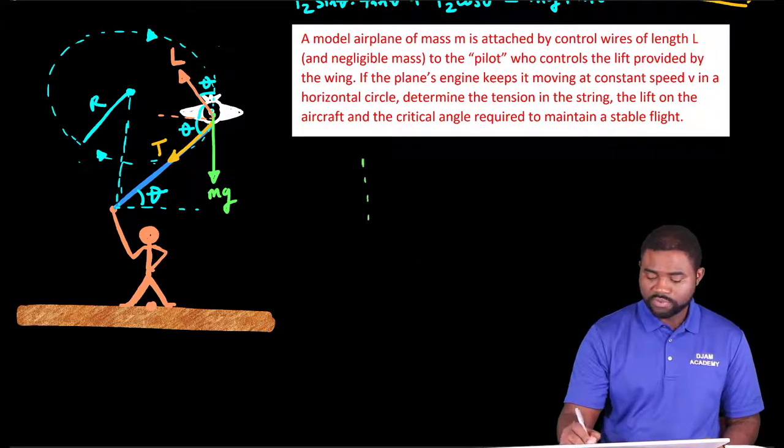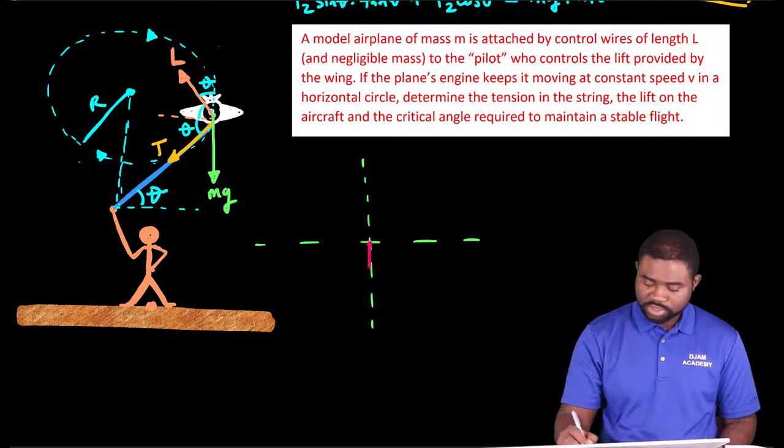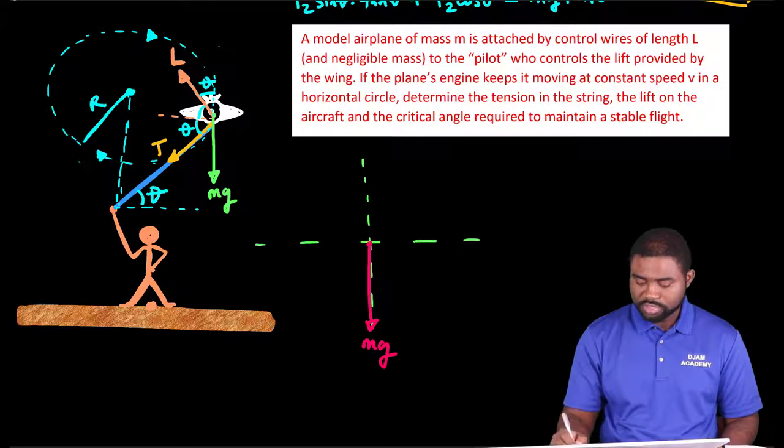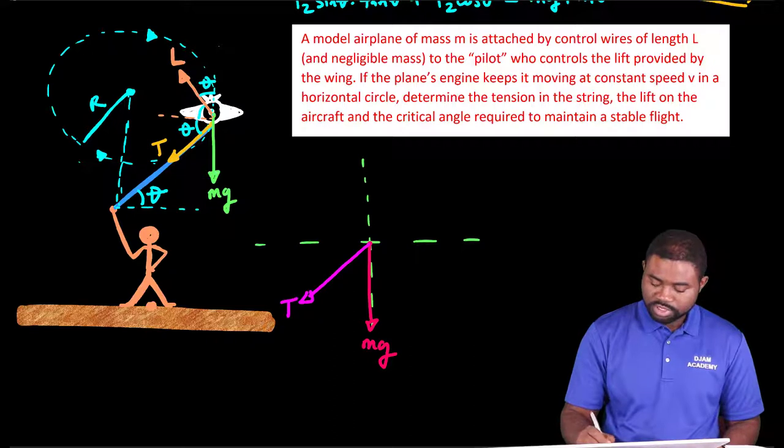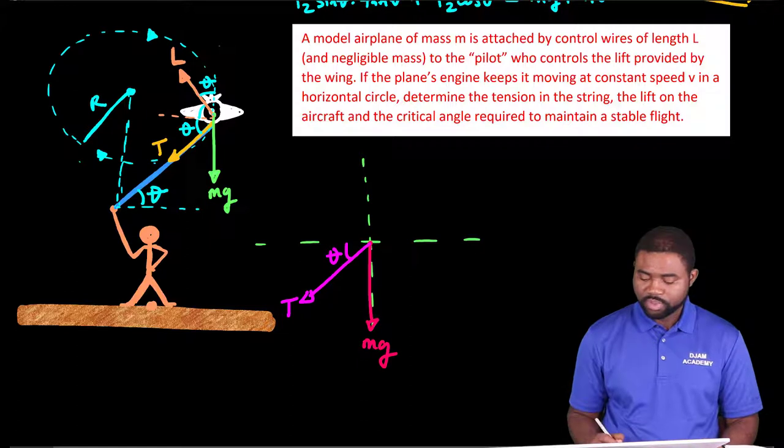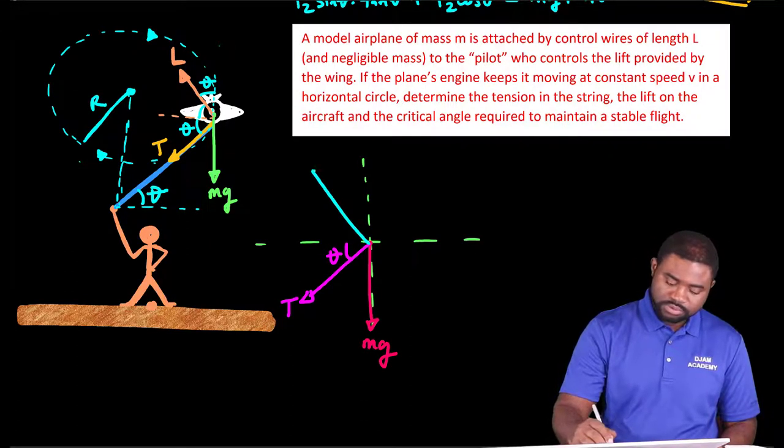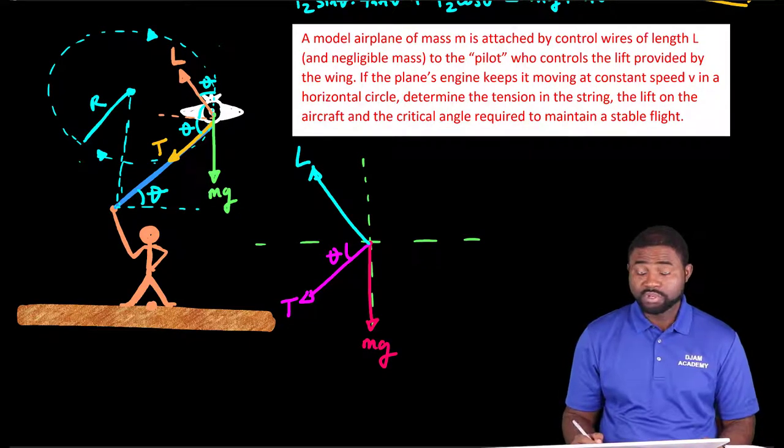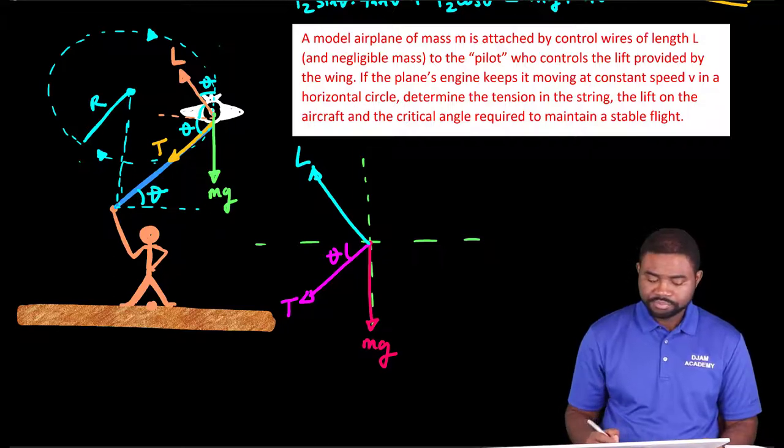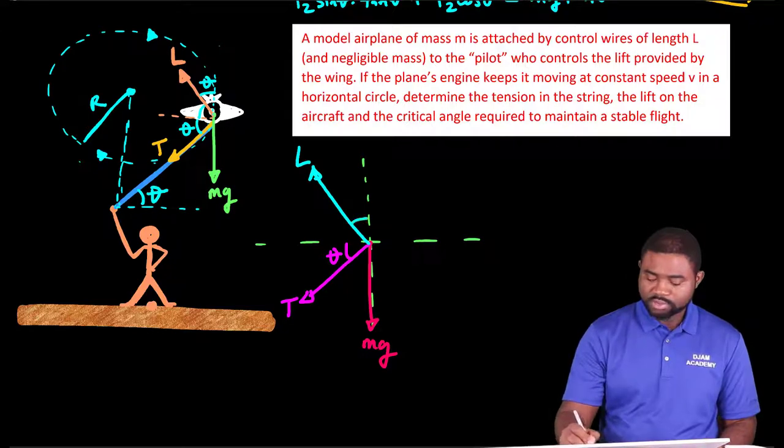I'll start with a coordinate system. We have the weight which acts vertically downwards, we're going to call this mg. We have the tension force T. This angle is theta. Then we have the lift force L. The lift force is due to the airflow under and above the plane. Looking carefully, this angle should be theta.